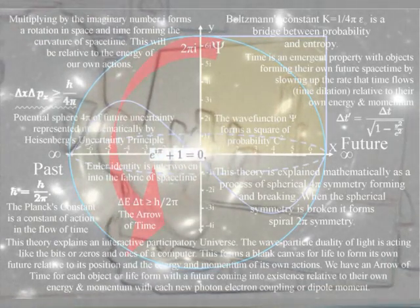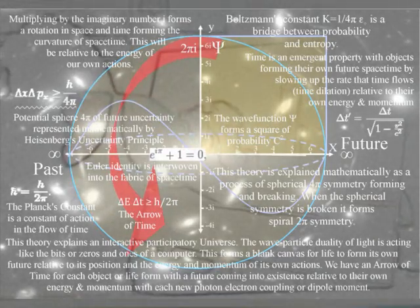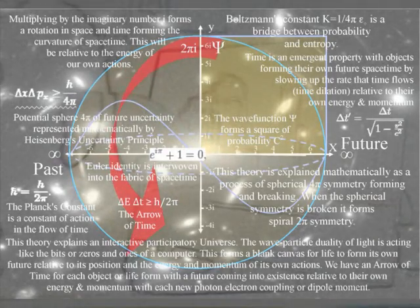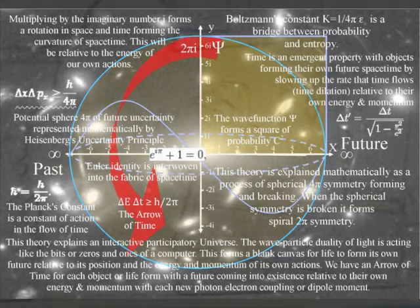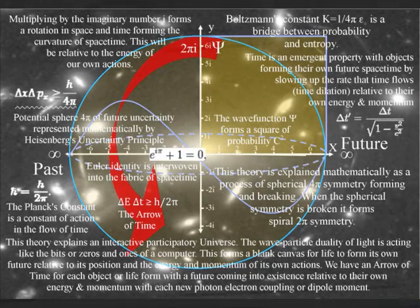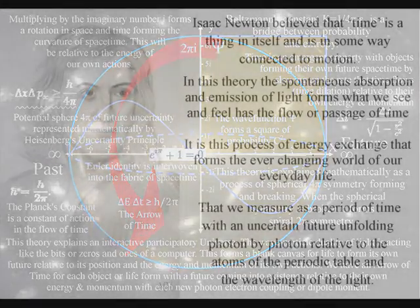In this theory, the universe is a continuum, with the mathematics of quantum mechanics representing the physics of time as a physical process, with classical physics representing processes over a period of time, as in Newton's differential equations.